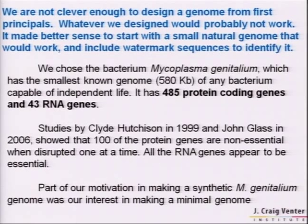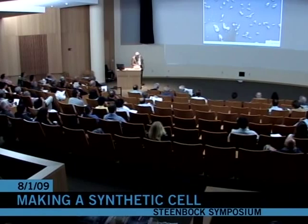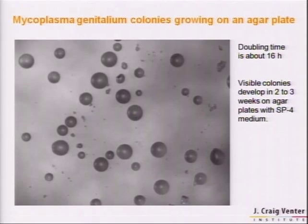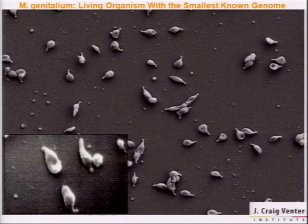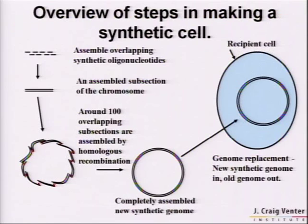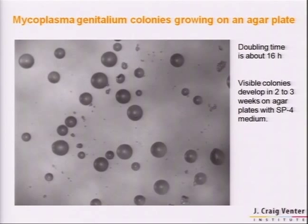Part of our motivation in getting into this whole project of synthesizing a genome and making a synthetic cell was our interest in making a minimal cell. This is Mycoplasma in a scanning EM. It's very small—about 300 nanometers across. It has a definite structure due to its internal cytoskeleton, and a little neck and head that attaches to human epithelial cells. Unfortunately, it grows very slowly in the laboratory. You can get colonies on an agar plate in two to three weeks, with a doubling time of about 16 hours, so in some ways it's not an ideal organism.